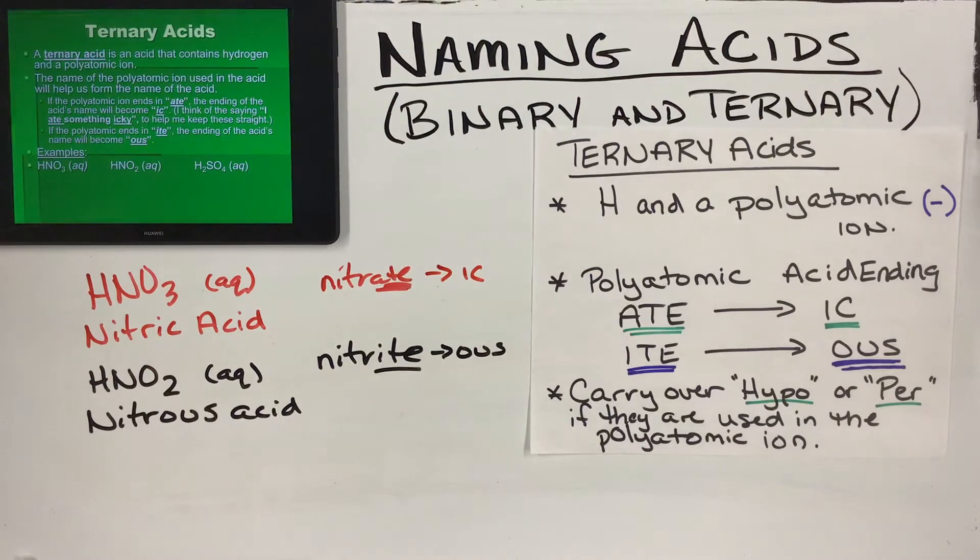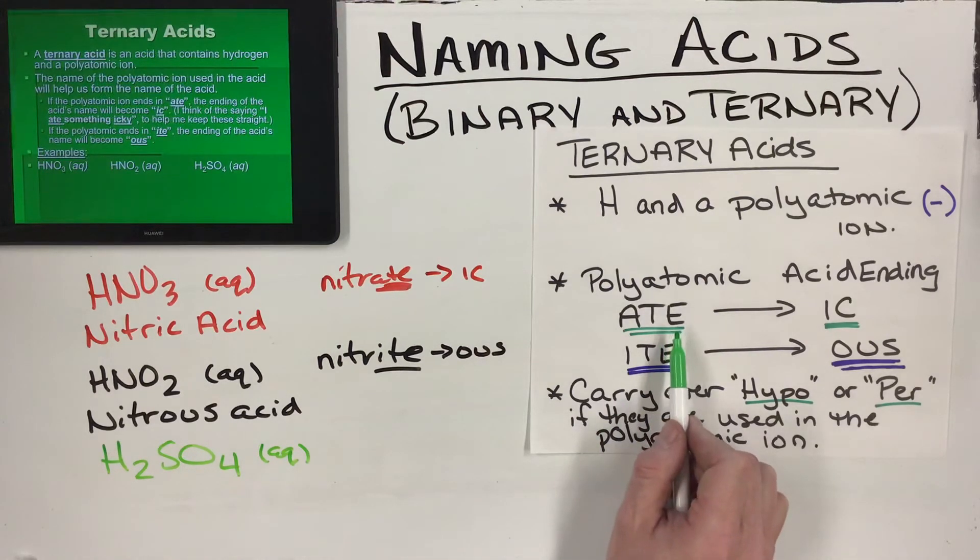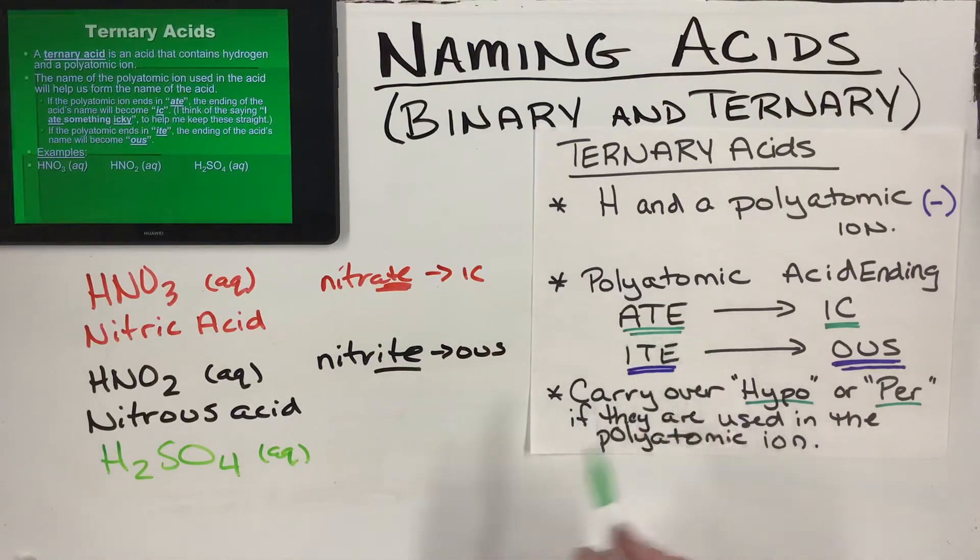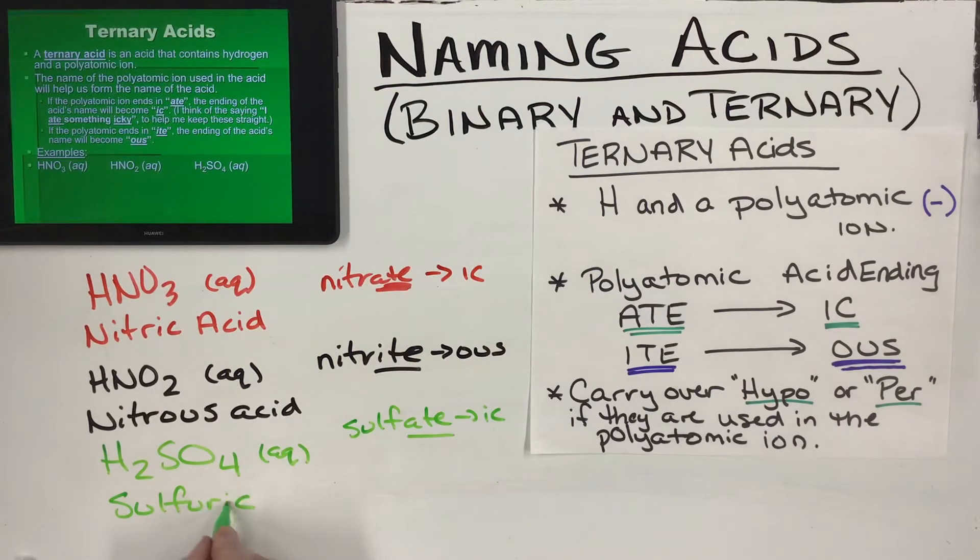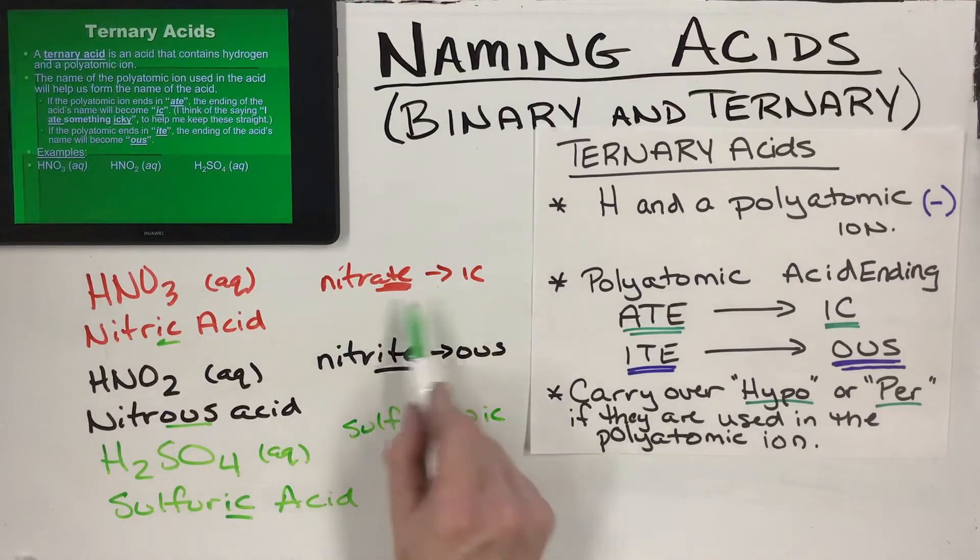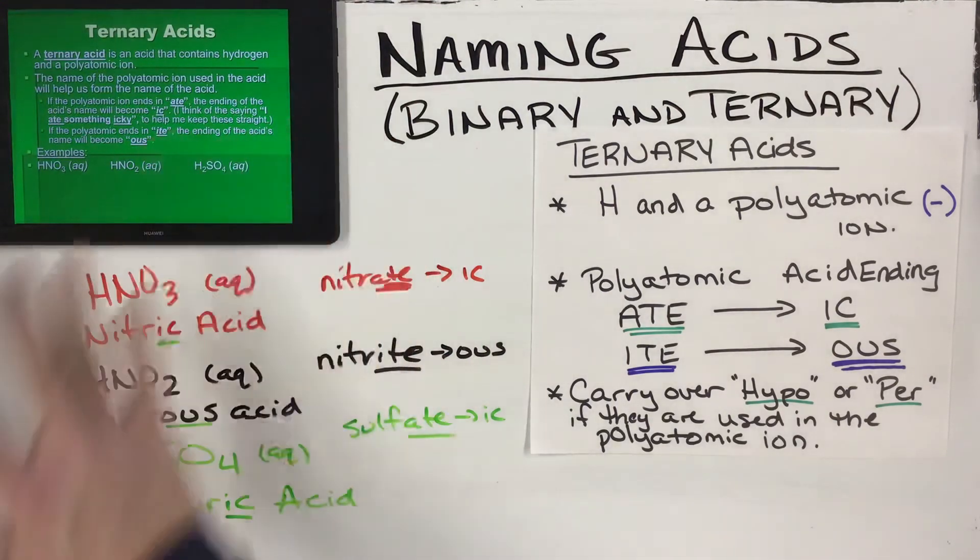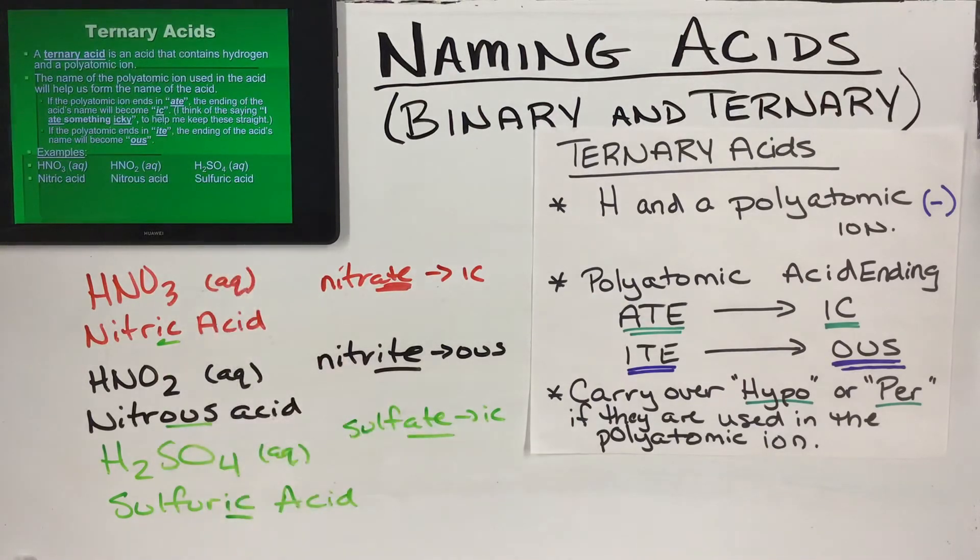The third example here: H2SO4, it too is aqueous. Hydrogen, sulfur, oxygen - more than two elements, not using hydro, going to be using this -ate ending. SO4 is sulfate - it's super in Nick the Camel. SO4 is sulfate, so I'm using sulfate, and that means I'm going to be using -ic. I ate something icky, so this one will be sulfuric acid. You can see the endings: the -ates get -ic, the -ites get -ous.